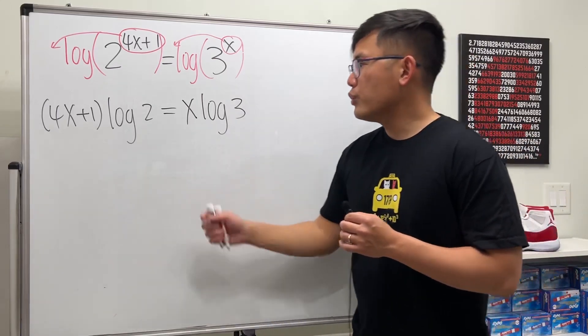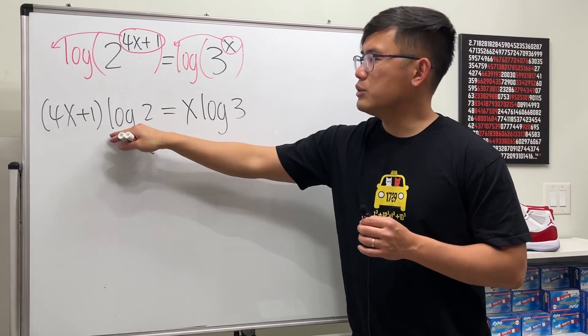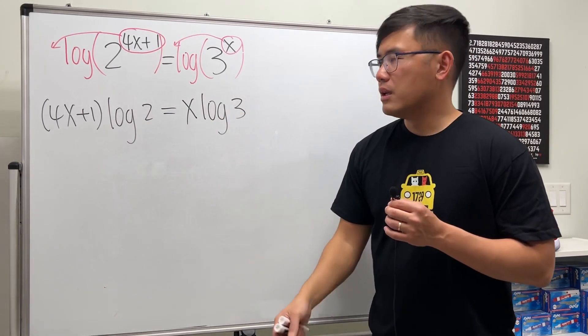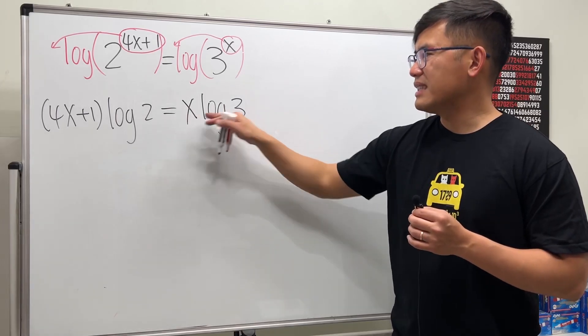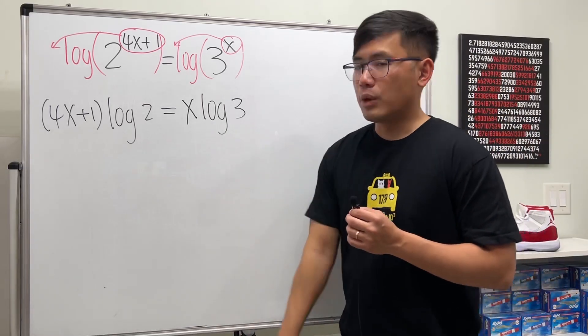Usually, you want to have the x or whatever at the front of the number, because this right here is just log of 2 as a number. If you put the x at the end, then it looks like the x is inside. That's not correct. By the way, this is what we have.